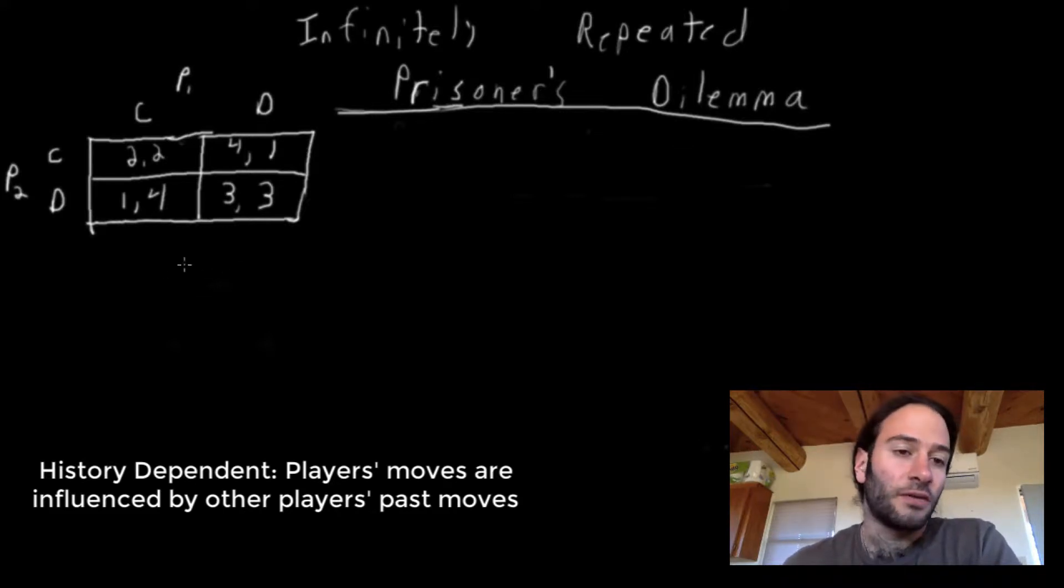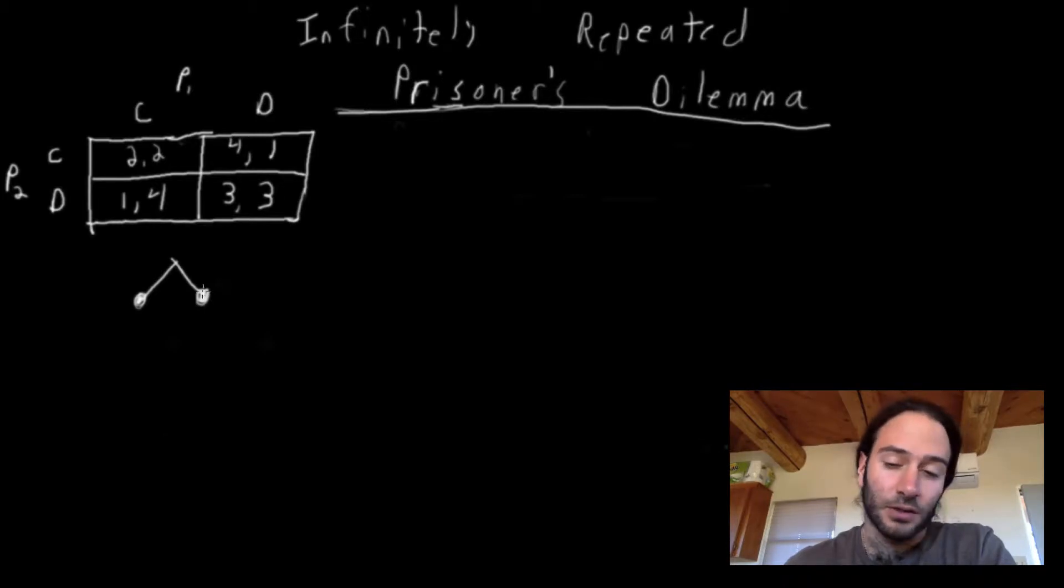That's the notion of this infinitely repeated game. If we really wanted to, we can draw it out in a game tree like we did before and see something like this, where each decision node corresponds to a full history of past actions by both players. We're not going to draw that out. It's infinite, so we can't. But even just one or two steps, it gets pretty big pretty fast.